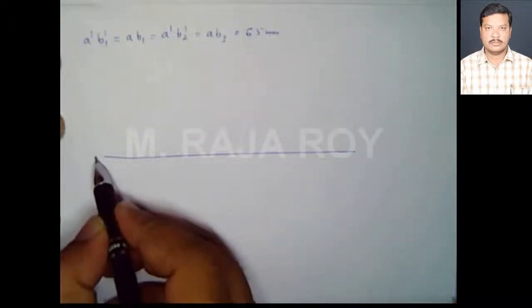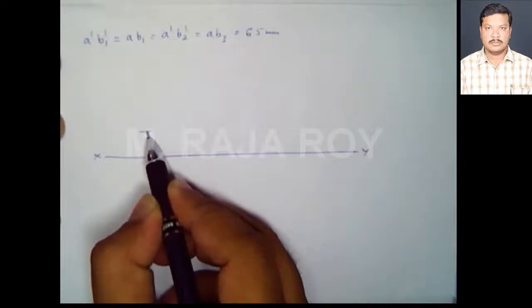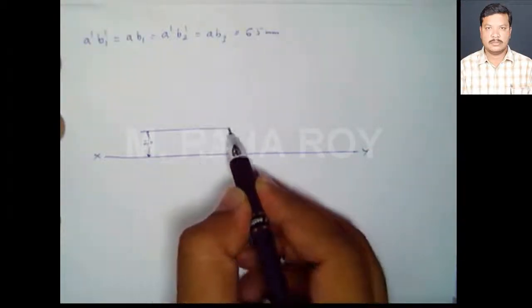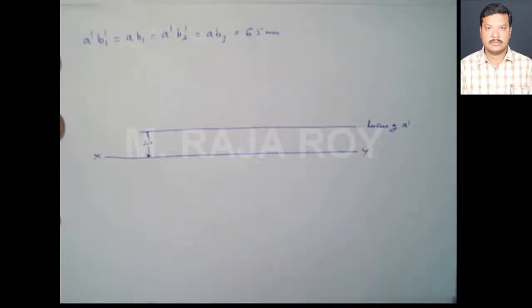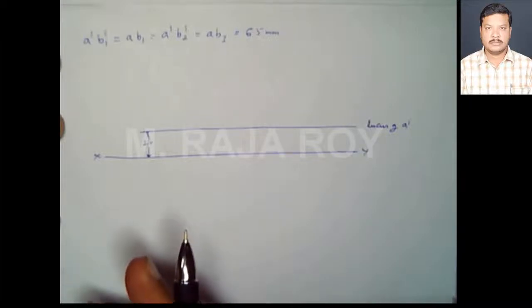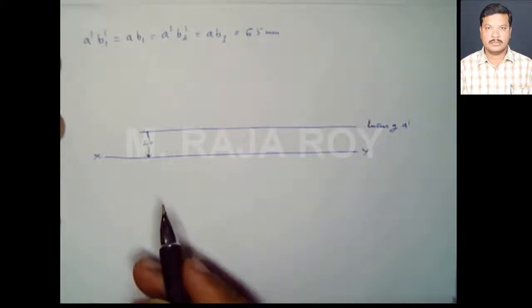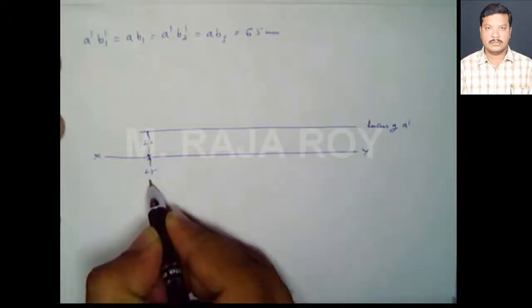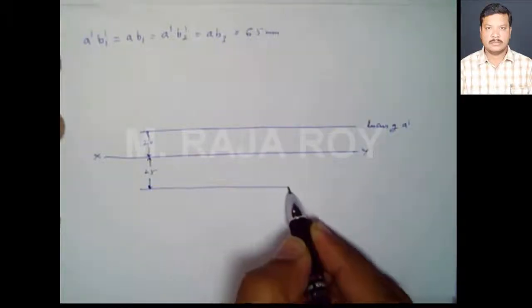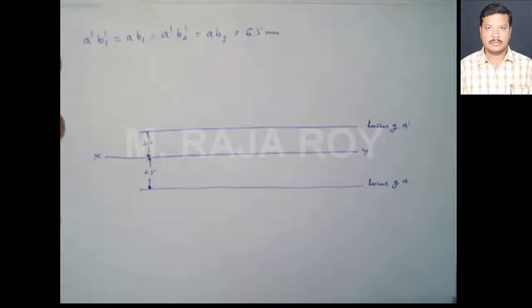First I will take the XY line. End A is 20mm above HP, so at a distance of 20mm I will draw one locus line — this is the locus of a'. End A is 20mm above HP means we will get the front view of that point 20mm above the XY line. The same point A is 25mm in front of VP, so at a distance of 25mm from the XY line I will get the top view of the point — this is the locus of a.